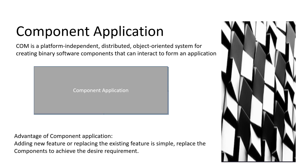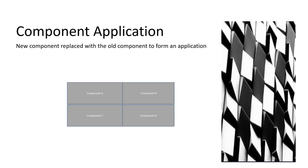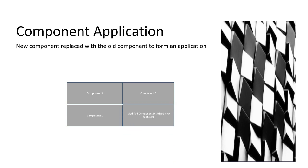The advantage of this component application is that it can be modified dynamically and components can be replaced. For example, if a new feature has been added in the form of Component D, developers need to replace only Component D — which adds the new feature — while the existing Component A, Component B, and Component C remain intact and undisturbed. The new component replaces the old one to form the application.